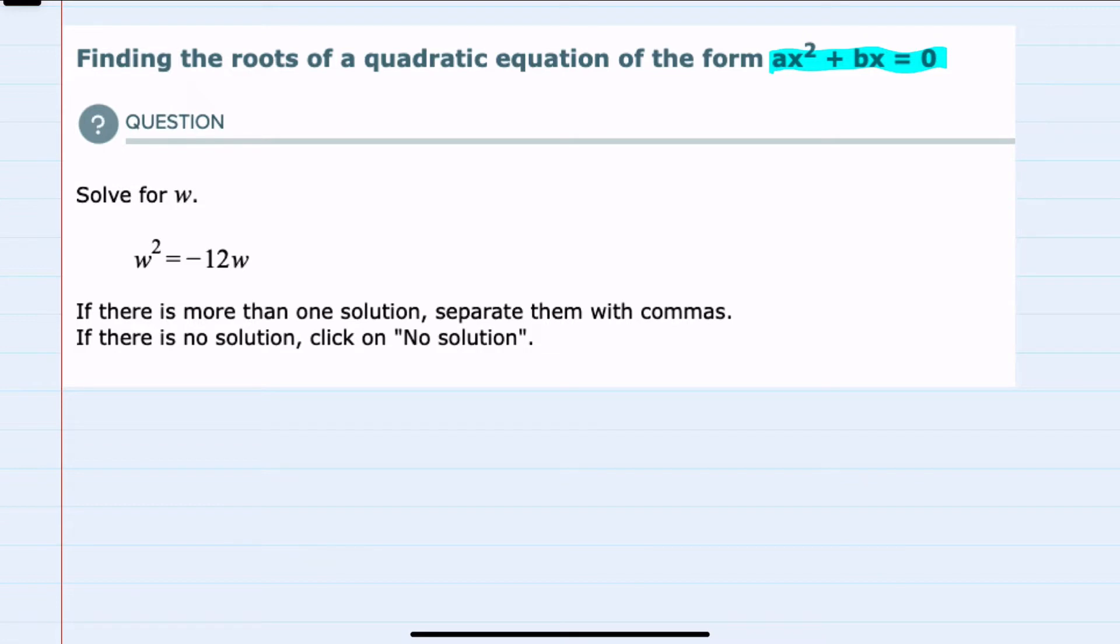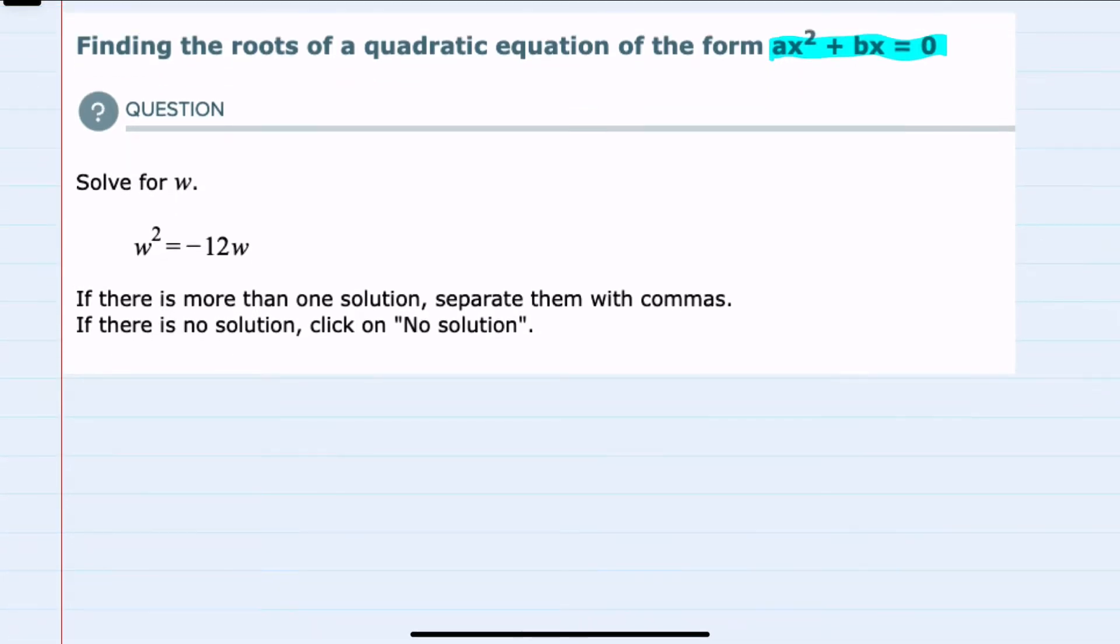In this example, we're solving for w and w squared equals negative 12w. Finding these solutions, I'll need to put this equation in this form.